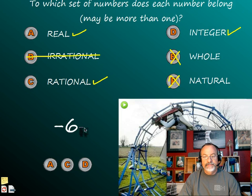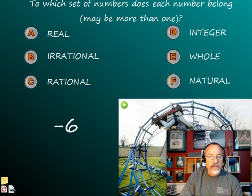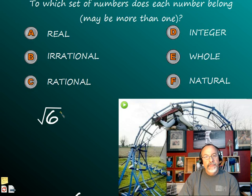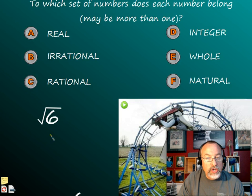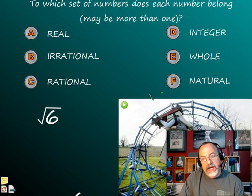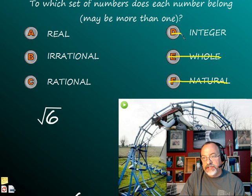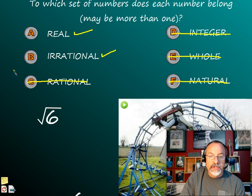Let me do one more and then we'll wrap this video up. How about the square root of six? The square root of six — is it a perfect square? Is there a number multiplied by itself equal to six? No. Two times two is four, three times three is nine — no. So again, it's not a natural number, not a whole number, not an integer, not a rational number. It is irrational because it's a square root that's not a perfect square. And again, everything's a real number. So it's going to be irrational and real — those would be the two answers for this.